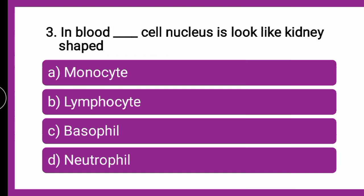The next question is: in blood, which cell's nucleus looks like kidney-shaped? Whether monocytes look kidney-shaped, lymphocytes look kidney-shaped, basophils, or neutrophils — which blood cell is kidney-shaped? Put your answers in the chat box first. We will go for the explanation of all the shapes.